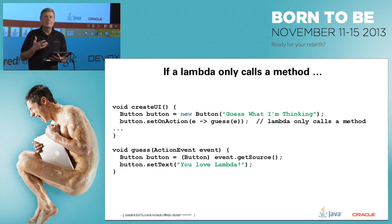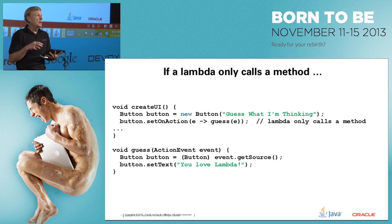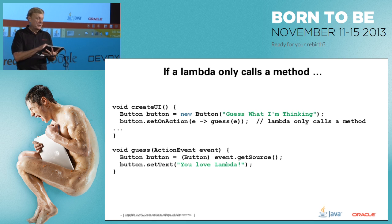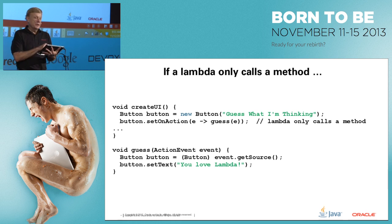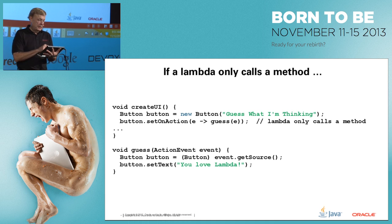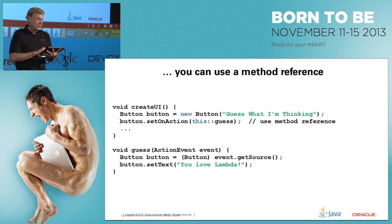There's another related concept called method references. If in a lambda expression all you're going to do is call a method or constructor, you can use a method reference to save a bit of code and make things clearer. For example, here's an application with a button. When pressed, the action event triggers a lambda that calls a guess method. We can write: the lambda receives the event and calls guess with that same event, printing 'you love lambda.' But instead, we can use a method reference.